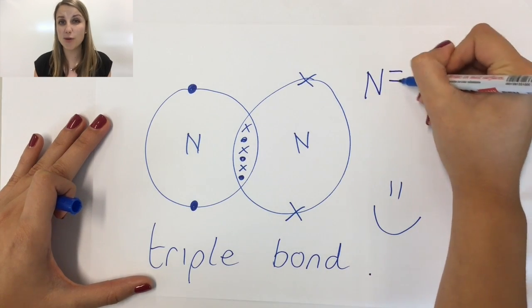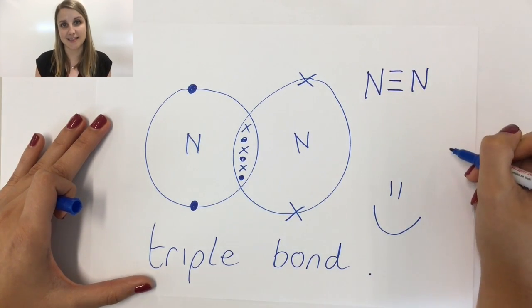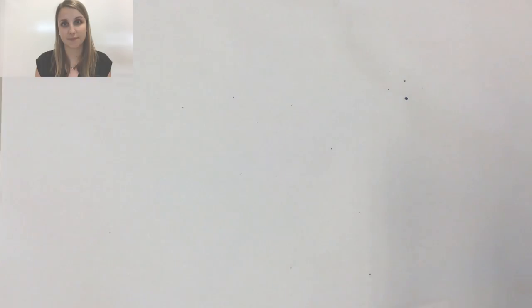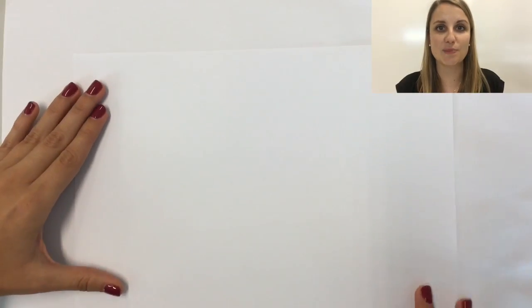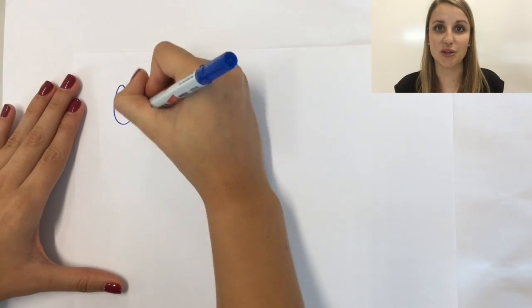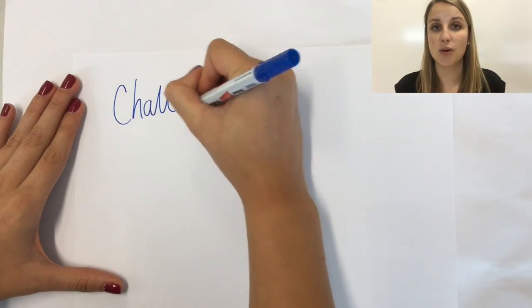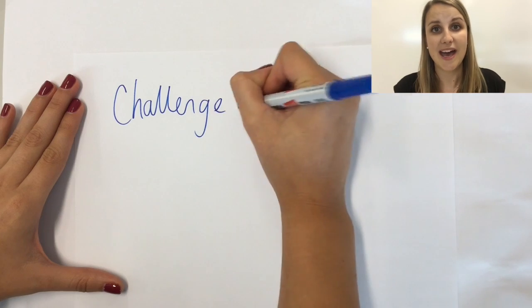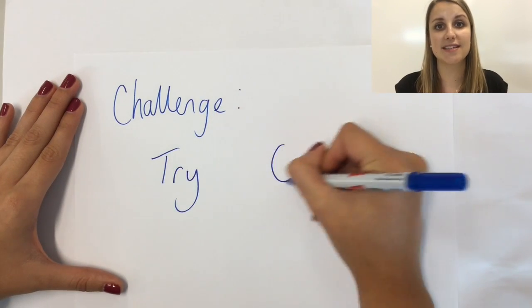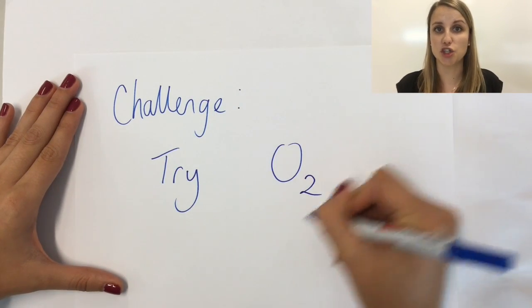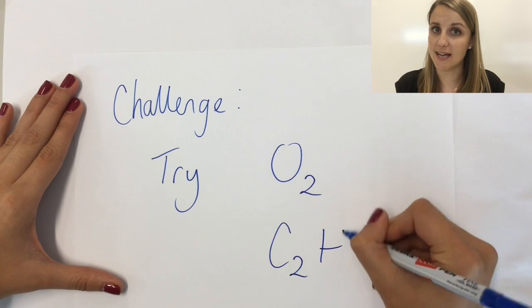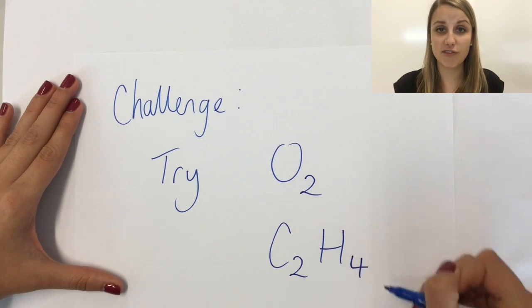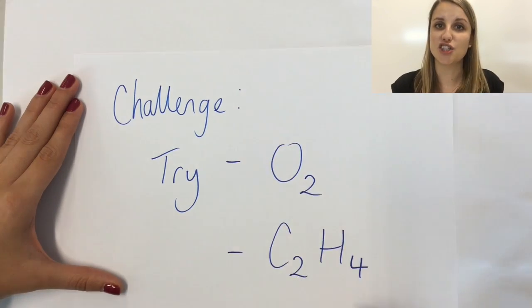The way we show that sometimes is like this. Other examples that you should be able to do include oxygen, O2, and ethene, C2H4, which is a little bit more complicated. Give them a go, and then check out the answers in your book. Thank you.